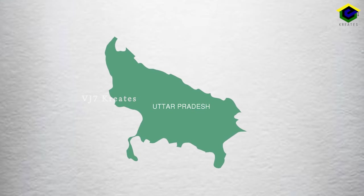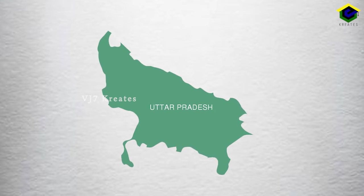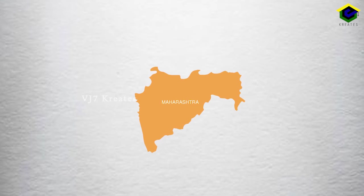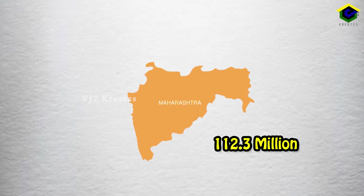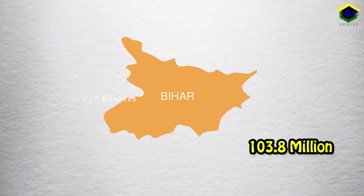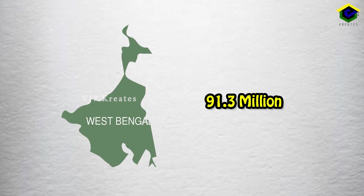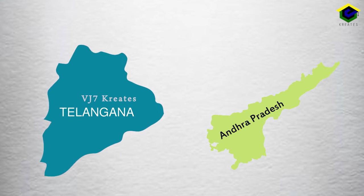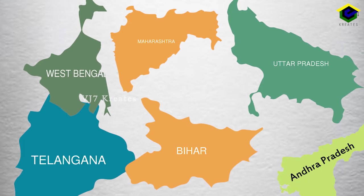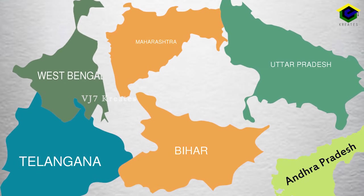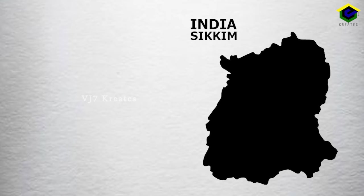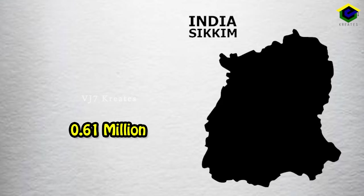Uttar Pradesh is the most populous state in the country with a population of 199.5 million, followed by Maharashtra 112.3 million, Bihar 103.8 million, West Bengal 91.3 million, and the combined Andhra Pradesh and Telangana 84.6 million. These five states account for about half of the country's population. Sikkim is the least populous state of India with 0.61 million population.